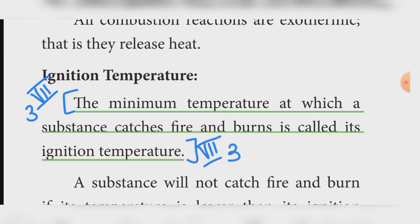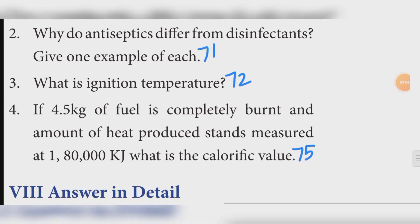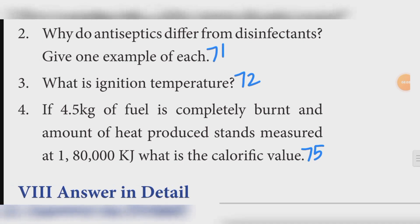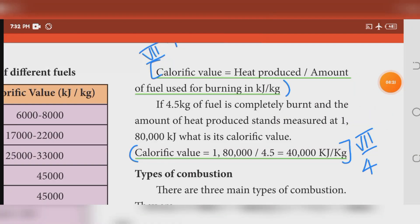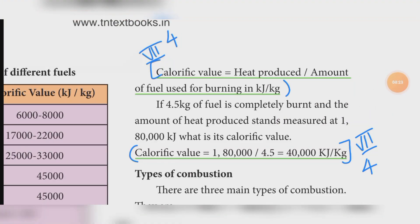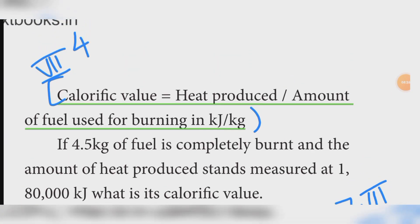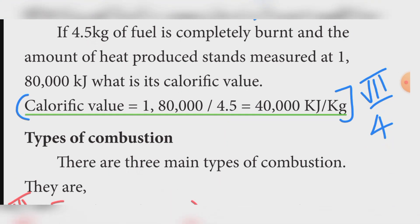Fourth one: if 4.5 kg of fuel is completely burnt and the amount of heat produced is measured at 1,80,000 kJ, what is the calorific value? Refer book page number 75. The calorific value is equal to 1,80,000 divided by 4.5, which equals 40,000 kJ per kg.